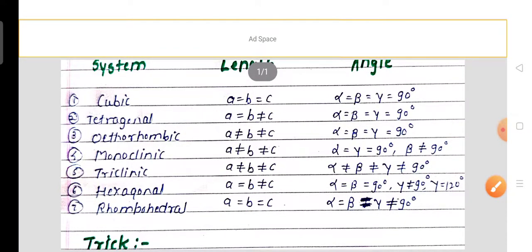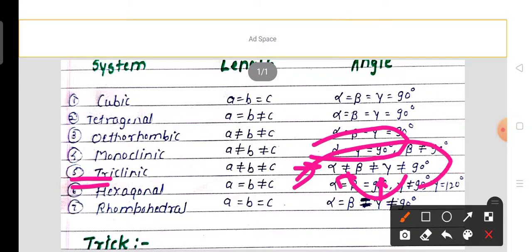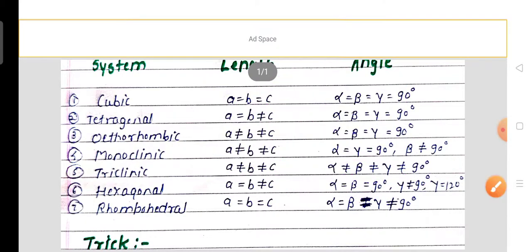In the monoclinic system, alpha = gamma = 90 degrees, but the remaining term, beta, is not equal to 90 degrees. In the triclinic system, 'tri' means there are three unequal signs: alpha ≠ beta, beta ≠ gamma, and gamma ≠ 90 degrees. This makes the triclinic system the most asymmetric system due to having the most unequal angles.